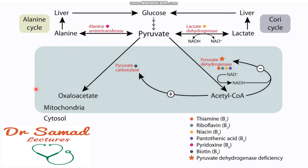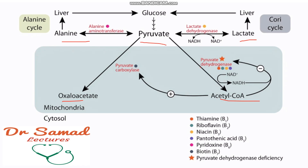Hello, welcome again. Today we will talk about pyruvate metabolism. If we talk about pyruvate, it is a very versatile substrate which can be shunted into different pathways. Basically, pyruvate can be converted into four different molecules: oxaloacetate, acetyl-CoA, alanine, and lactate — which represent four different pathways.